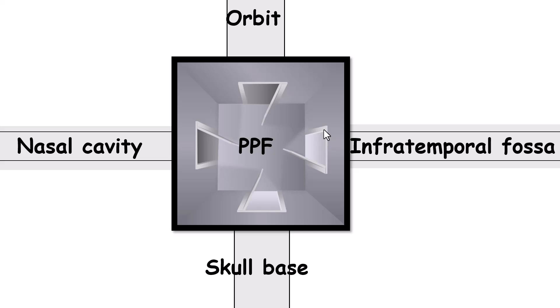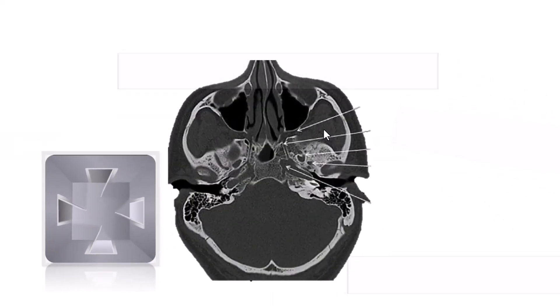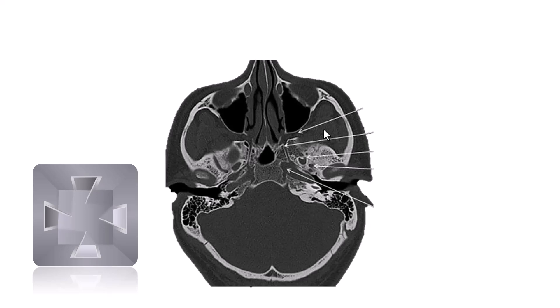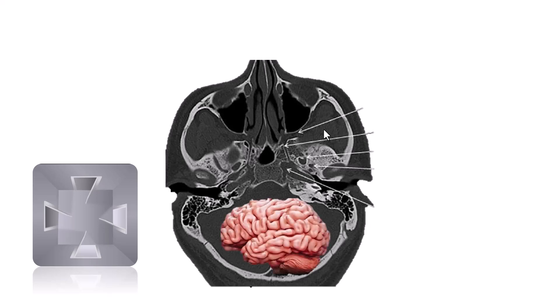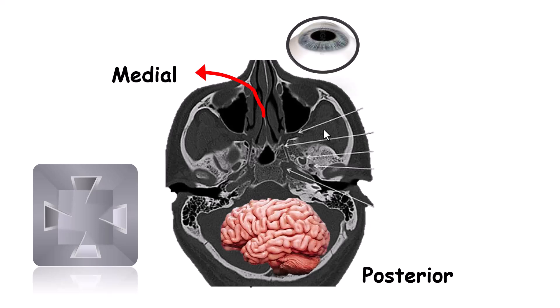To remember each hallway entering towards the pterygopalatine fossa, think about what lies around it. The brain is posteriorly, so the posterior door opens to the cranial nerves. Medially is the nose, so the medial door opens to the nasal cavity. Anteriorly is the eye, so the anterior door goes to the orbit, and the lateral door is towards the temporal bone or the temporalis muscle.